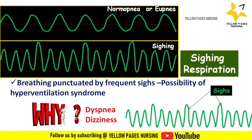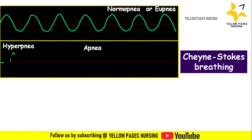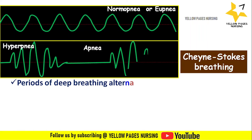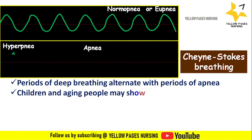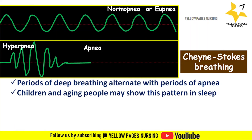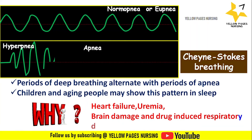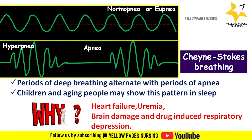Next comes Cheyne-Stokes respiration. Cheyne-Stokes respiration consists of periods of deep breathing alternating with periods of apnea, as shown in the graphical waveform. Children and aging people may show this pattern in sleep. Causes include heart failure, uremia, brain damage, and drug-induced respiratory depression.